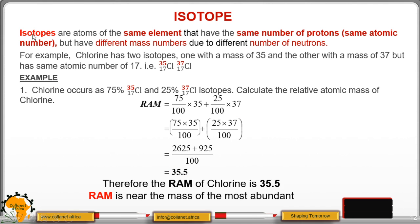Now let us look at isotopes. Isotopes are atoms of the same element, meaning they have the same number of protons or the same atomic number, and also the number of electrons equals the number of protons, but they have different masses due to different numbers of neutrons. What brings the difference is the number of neutrons, because the number of protons and electrons are equal.